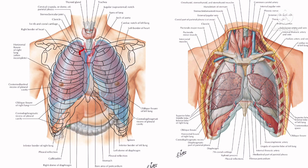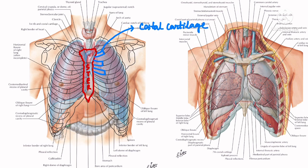The sternum is a midline bone situated in the anterior median plane of the breast. This sternum articulates with the costal cartilages, which are hyaline cartilages present on the anterior end of the ribs. We are marking the costal cartilages that are articulating with the sternum on both sides. The heart is present obliquely behind the sternum and adjoining costal cartilages.